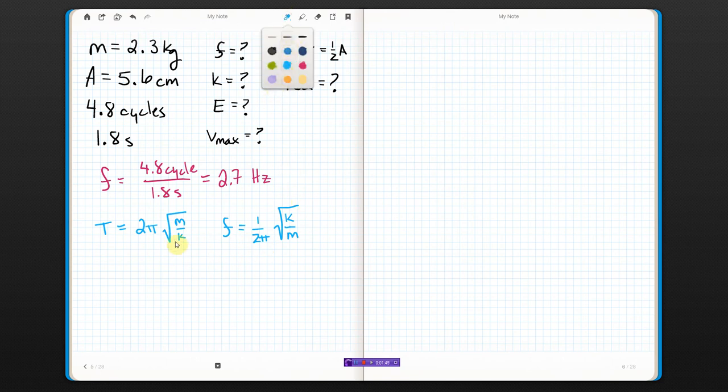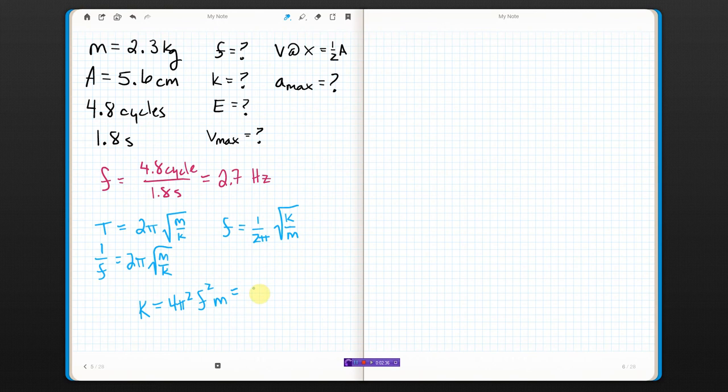If you use this one, you just need to flip this over. So, if you use this one, you'll have to do like 1 over f equals 2 pi square root m over k, like that. Either way, you're going to end up with the same thing. I solve for k. k ends up being 4 pi squared frequency squared times mass, which in this case ends up being 650 newtons per meter. I've rounded that to two sig figs.